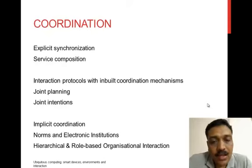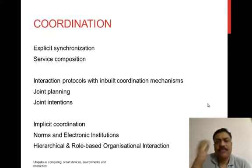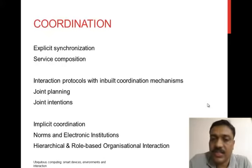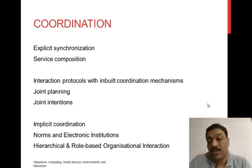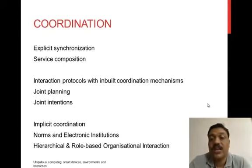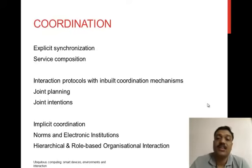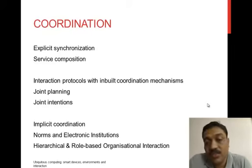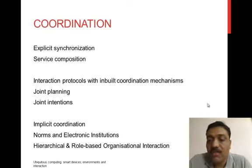In a perfectly coordinated system, explicit communication may not be needed to achieve a common goal because the systems synchronize themselves and align their activity based on a good model — which is called mutual modeling.